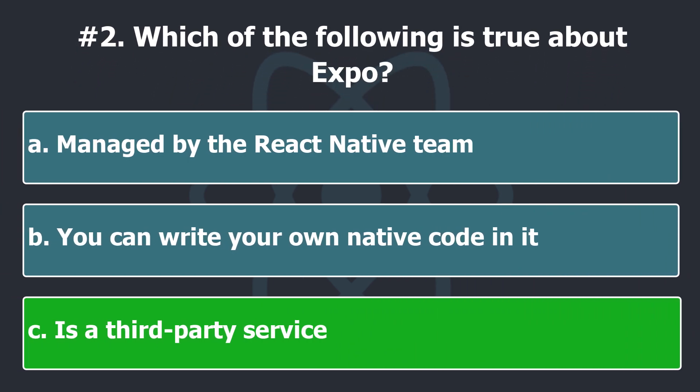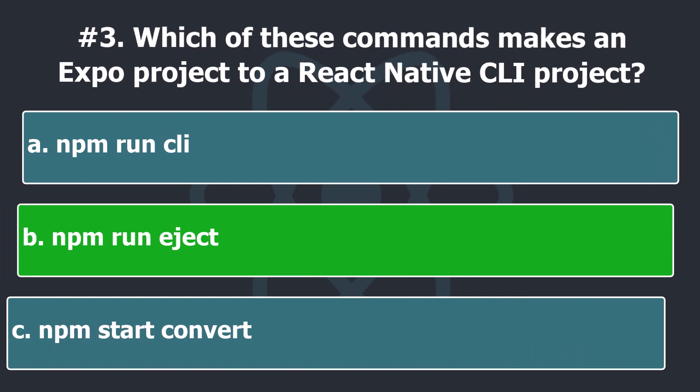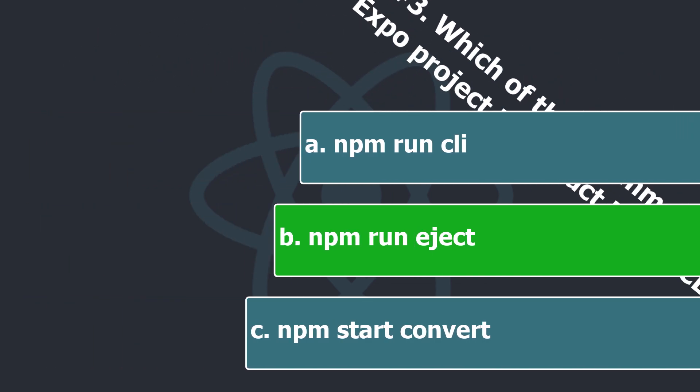Expo is a third-party service which is completely free to use. You don't need to sign up to get started, and you don't have to pay to build an app. In the terminal of an Expo project, run this command — npm run eject — to turn it into a React Native CLI project.